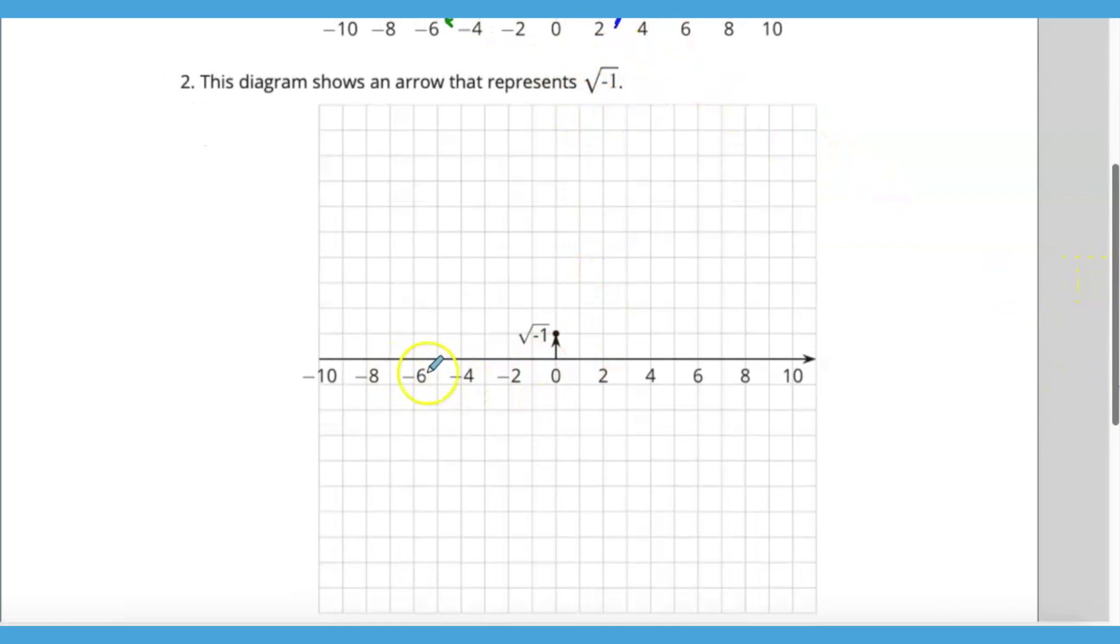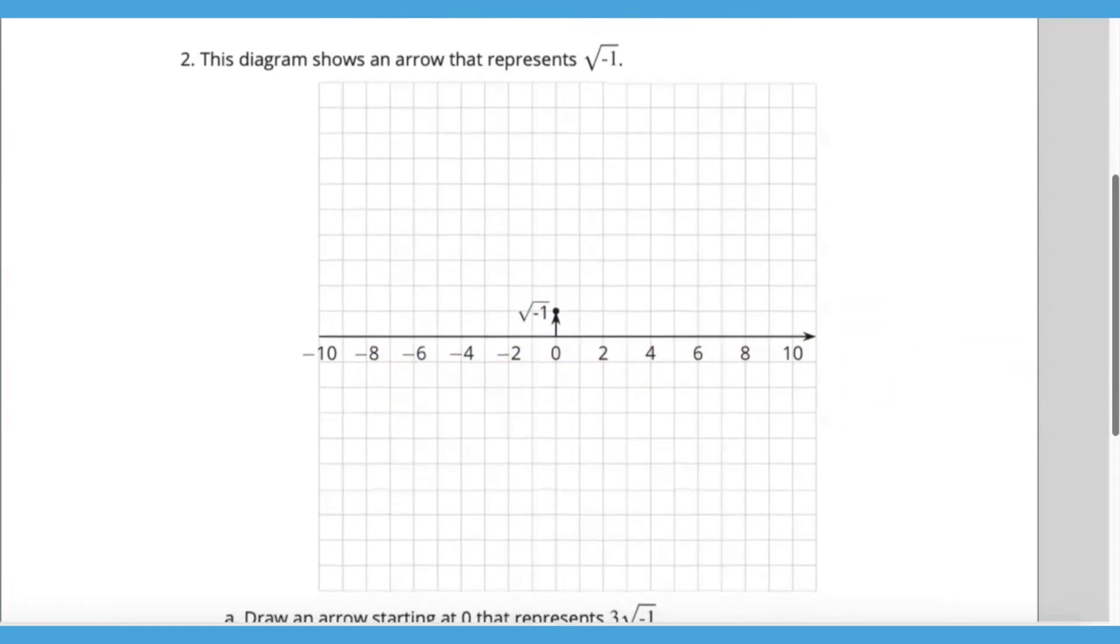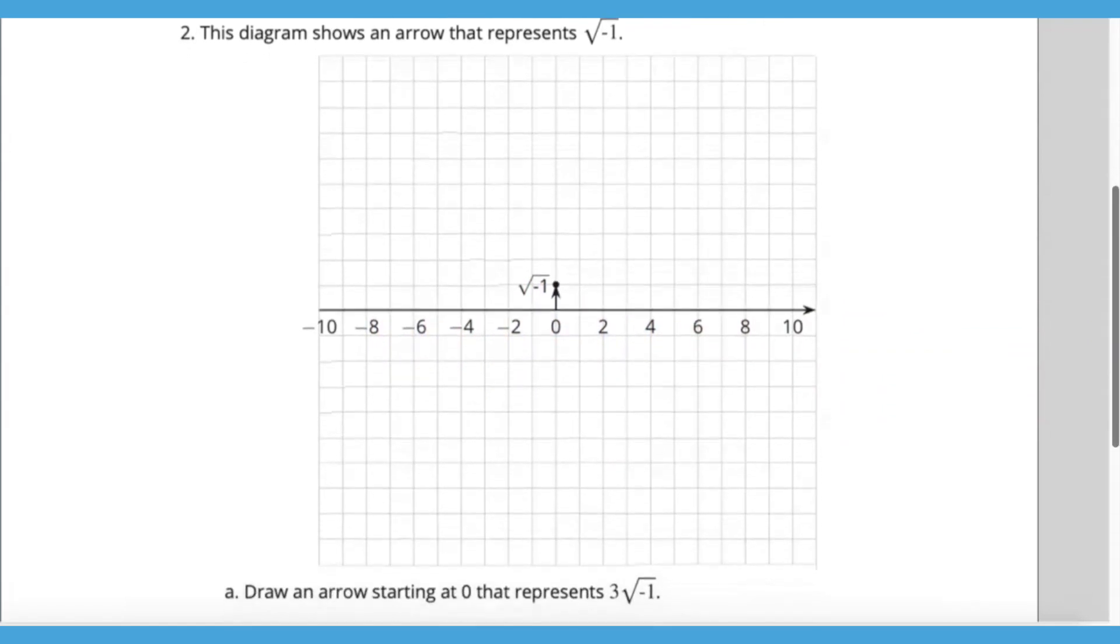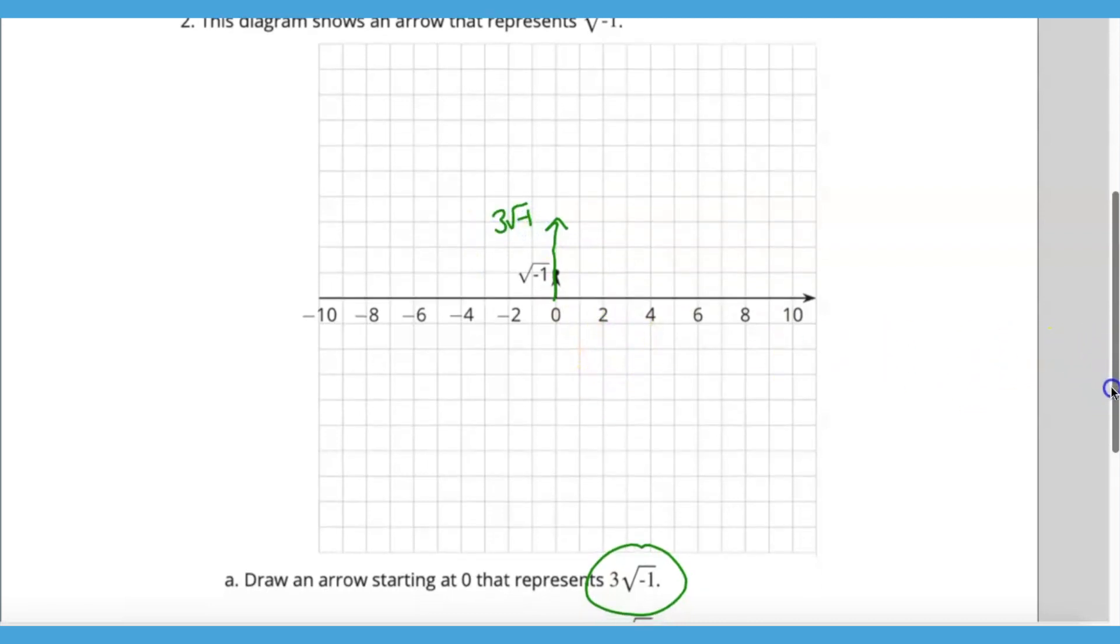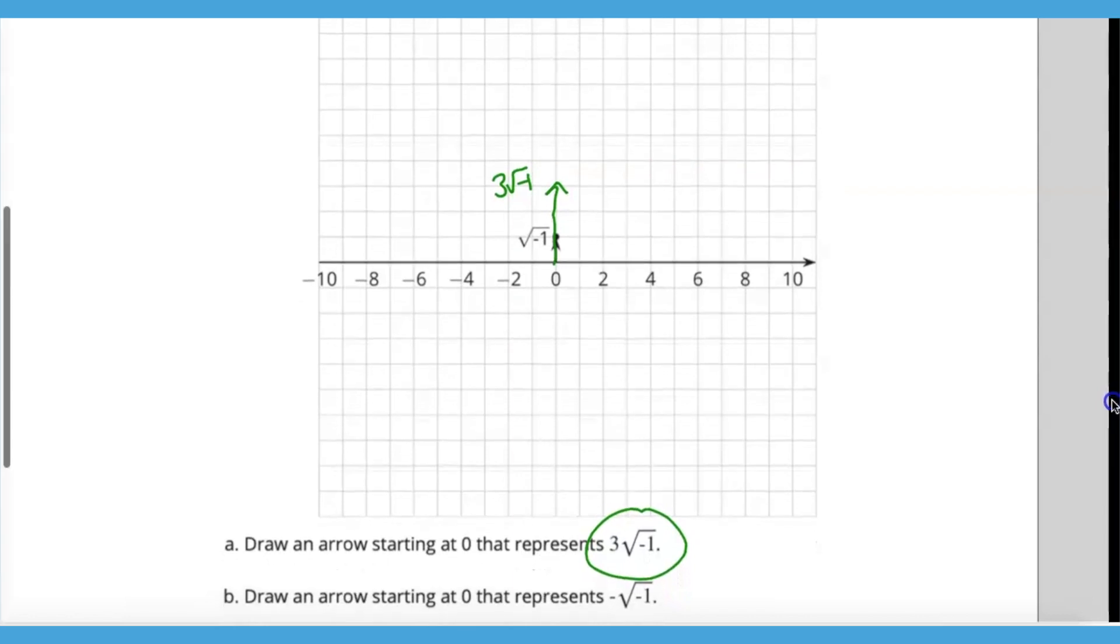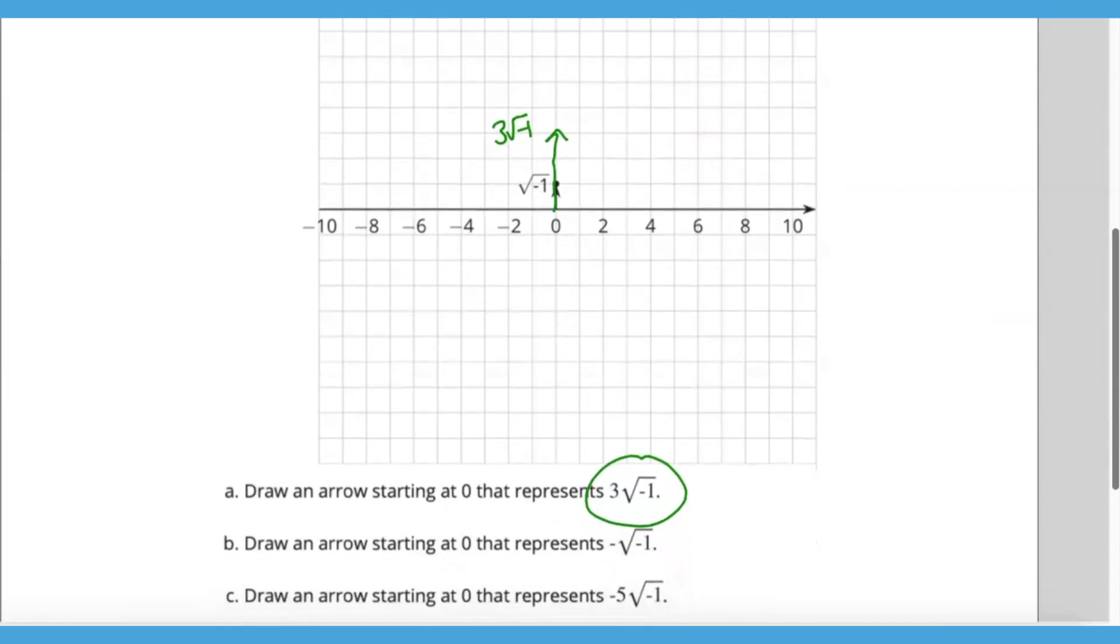To represent the solution of negative one that is not on the real number line, I just need to go up one to represent the square root of negative one. If I have three times the square root of negative one, I need to go one, two, three, and that could be my representation of three times the square root of negative one. At this point, we still have not introduced the letter i yet.